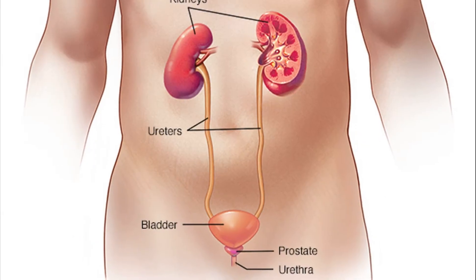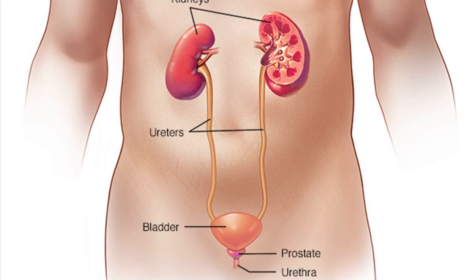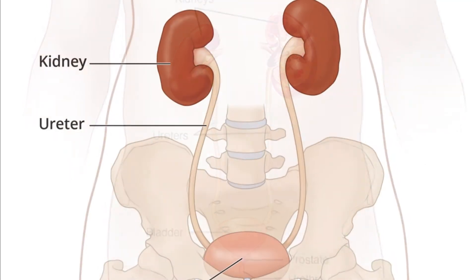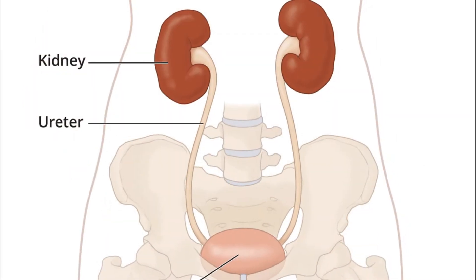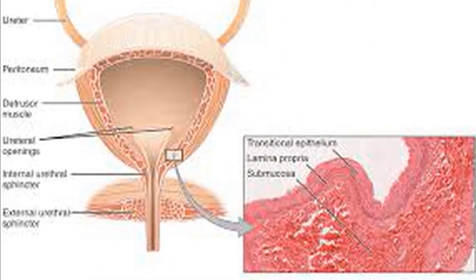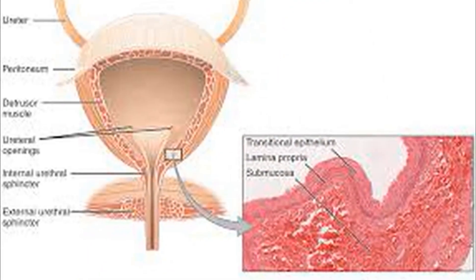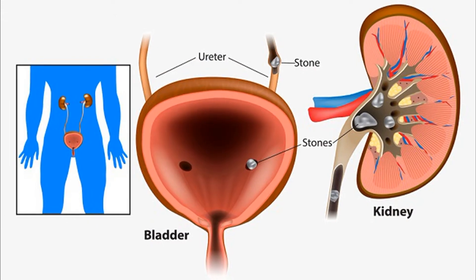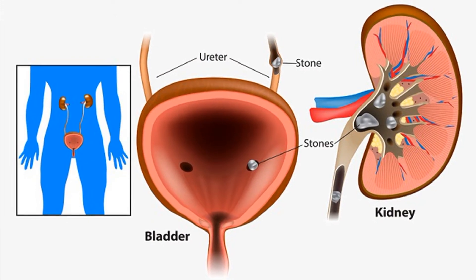The urine formed in the kidneys is sent to the ureters for temporary collection in the urinary bladder. When the bladder is full, the urine is expelled to the outside through the urethra. This process of expulsion of urine to the outside is called urination.